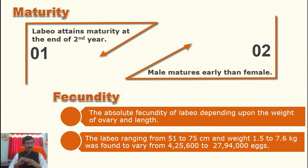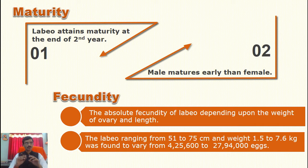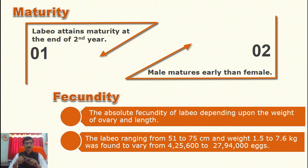Labeo attains maturity at the end of the second year. An important point: male matures earlier than the female.